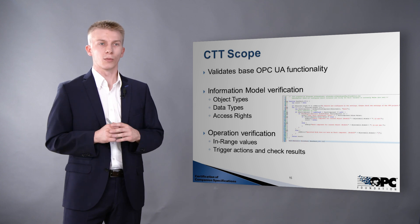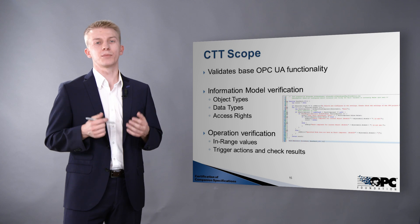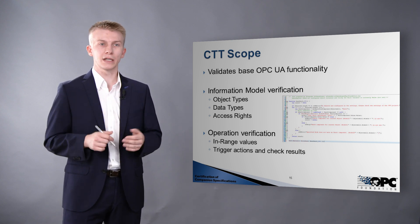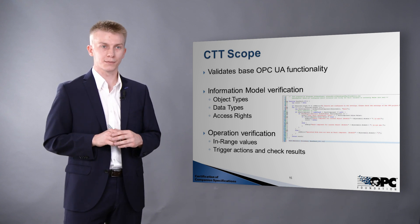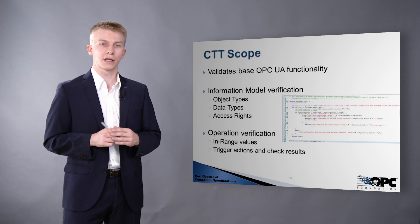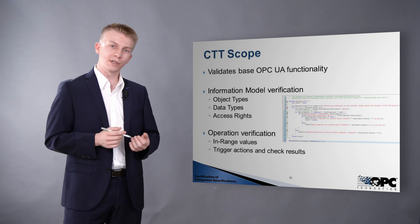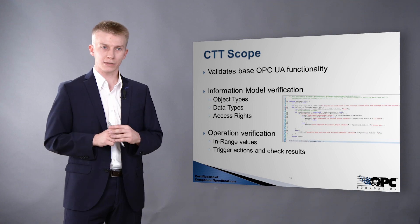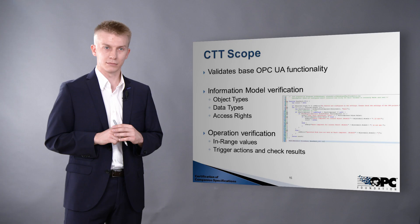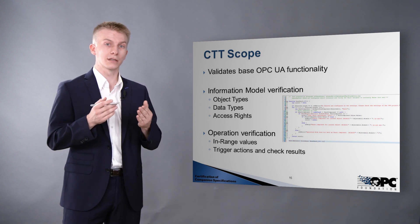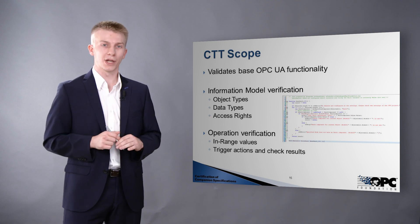Now let's talk about the compliance test tool, the CTT. Its scope is to validate base OPC UA functionality, and that is working pretty well. This includes information model verification — checking type definitions, object types, data types, and access rights of instances of certain objects. But that is like looking at a building from the outside and confirming it has four walls and a roof — it doesn't tell you anything about behavior implemented inside. The most important part is operation verification: you can do in-range value checks to validate that, for example, an item describing a percentage doesn't exceed 100. You can also trigger actions and check operation results — for example, move a robot arm to a certain position and validate the position matches your expectation. That is the key for companion specification testing.